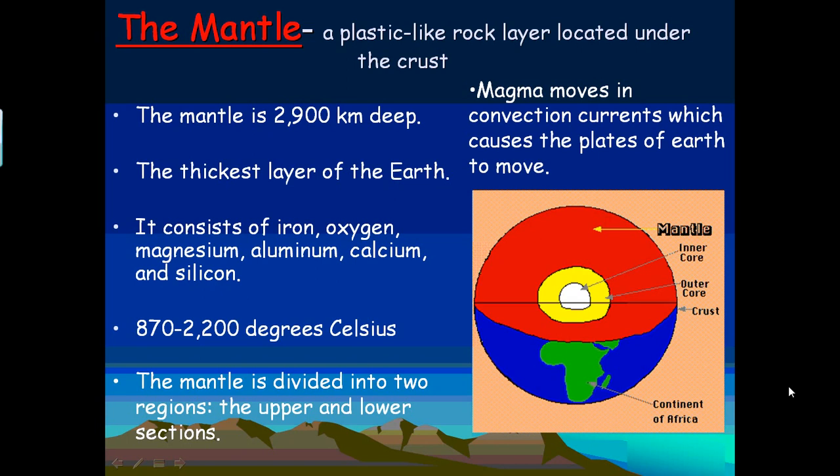The mantle consists of iron, oxygen, magnesium, aluminum, calcium, and silicon. Its temperature ranges from 870 to 2,200 degrees Celsius, so it's very hot.